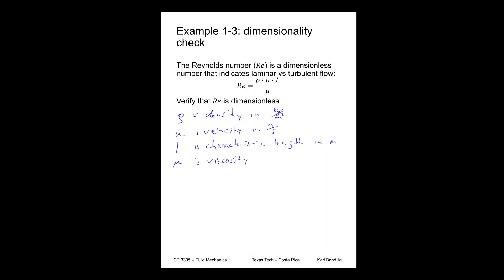So now if we write down our equation here, our Reynolds number is rho times u times L over mu. So that would be kilograms per meter cubed times meters per second, times meters divided by Newton times second, divided by meter squared. This is just plugging everything in.